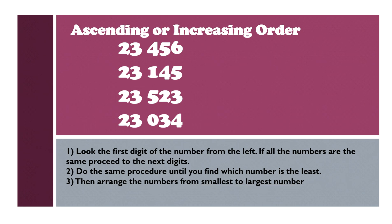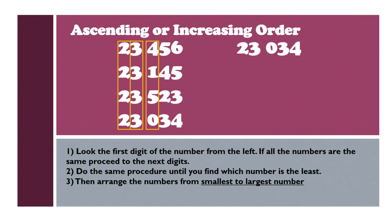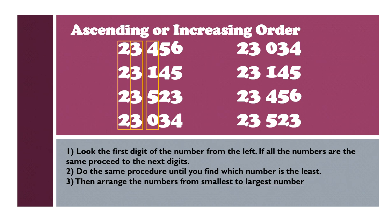So in these numbers, let us start with the highest place value, which is the 10,000th place. As you can see, the numbers in this set begin with 2. On the 1,000th place, they are all 3. So we proceed to the 100th place. The smallest number is 0, so what comes first is 23,034. Next is 23,145. Next is 23,456. And the last is 23,523.